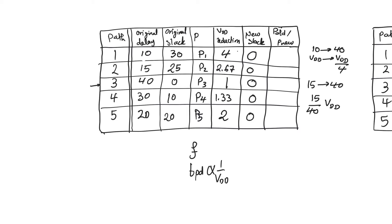Because the supply was reduced in path 1 by a factor of 4, the original power P1 is now reduced by a factor of 4 squared, or 16. For path 2, the reduction is 2.67 squared, which is 64 over 9. For path 3, there is no reduction in power since there was no reduction in supply — it is the critical path. For path 4, the reduction is 16 over 9, the least reduction because it had the least positive slack. For path 5, the supply was reduced by a factor of 2, giving a power reduction by a factor of 4.